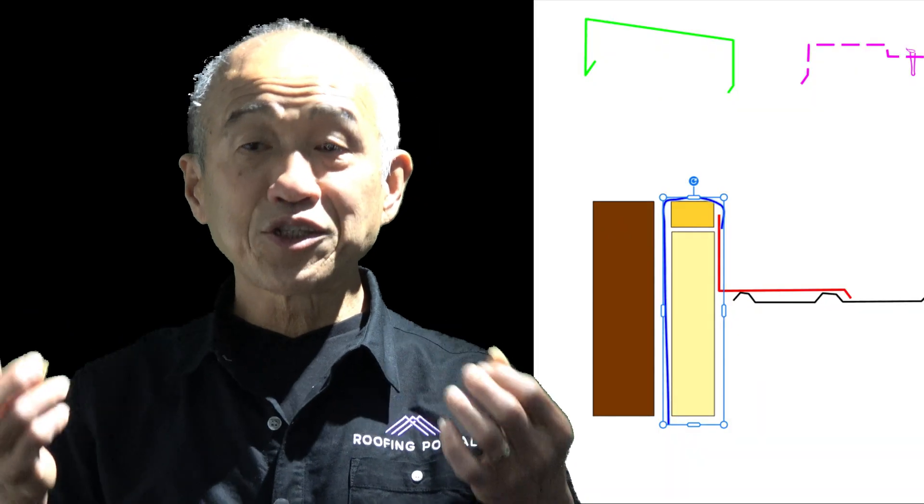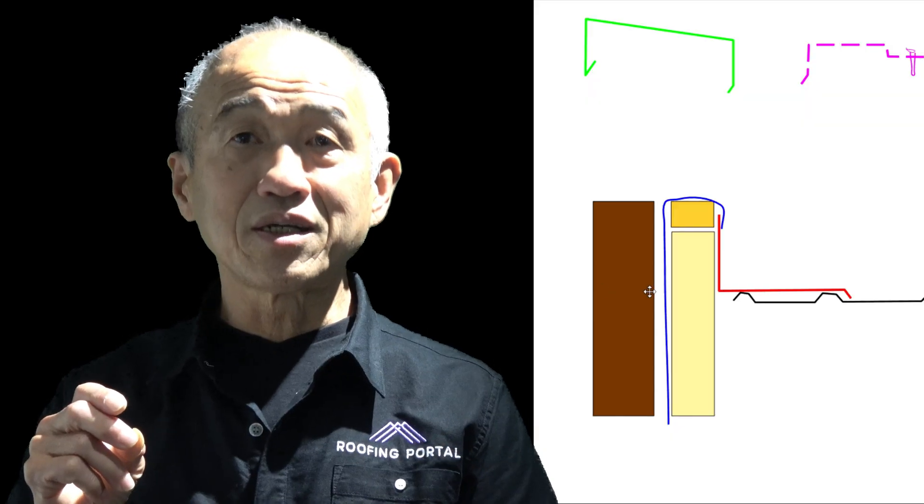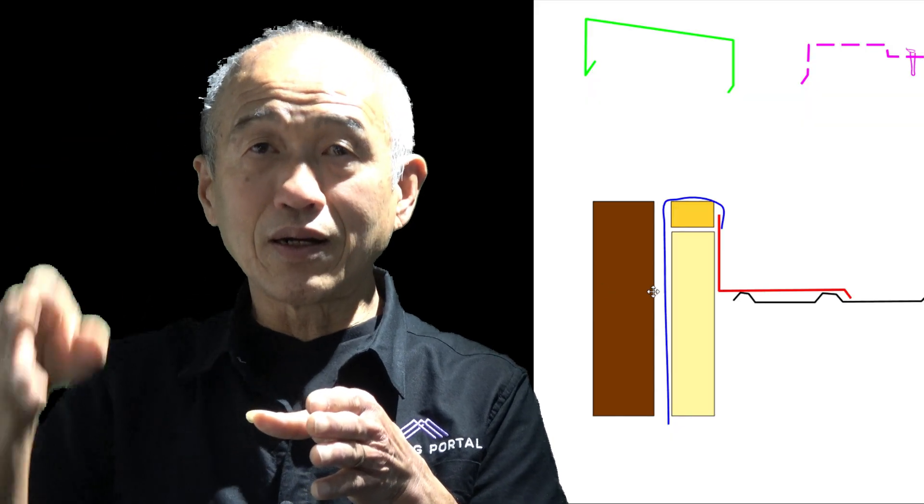Let's consider the membrane first, because that goes on before the capping. The code says the wall membrane has to come up the outside face of the inner wall. On a brick veneer house, the membrane is on the outside face of the timber frame — it comes up the outside face, goes over the top plate, then comes back down again. The reason is that it's supposed to drain any moisture back onto the roof and not back into the house. The National Construction Code specifically details this: the membrane has to come up, over, and out so water goes back onto the roof.